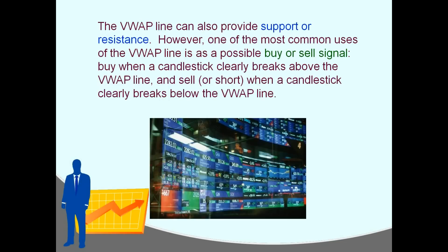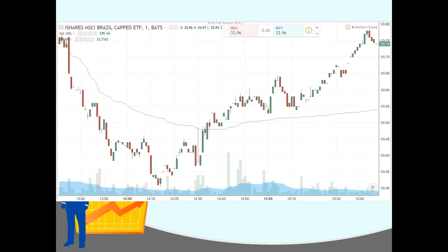The VWAP line can also provide support or resistance. One of the most common uses of the VWAP line is as a possible buy or sell signal. Buy when a candlestick clearly breaks above the VWAP line, and sell — or even short sell — when a candlestick clearly breaks below the VWAP line. This is not trading advice. I don't think you want to use just one indicator to base your trading or investing decisions on, but some people will use this as a buy or sell signal. Notice I say clearly — it has to have a clear break above or below.